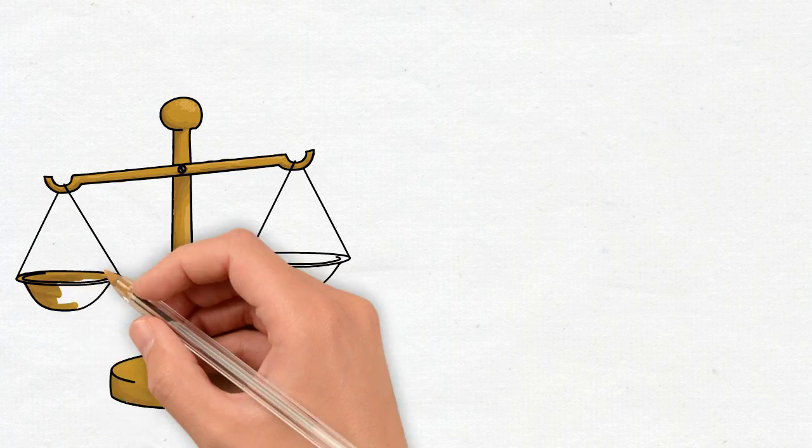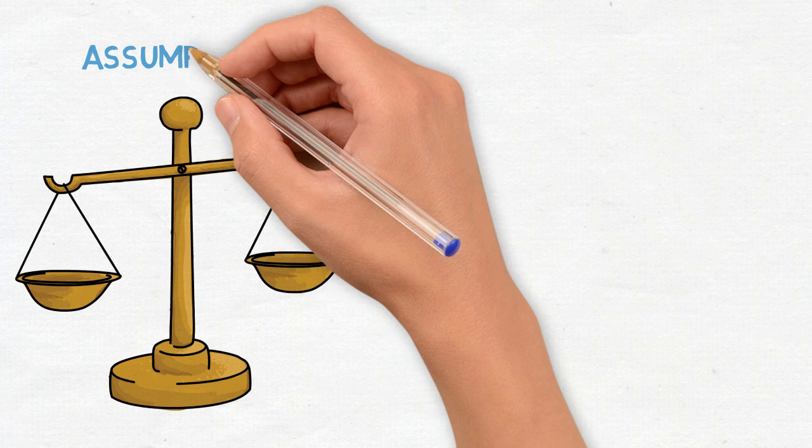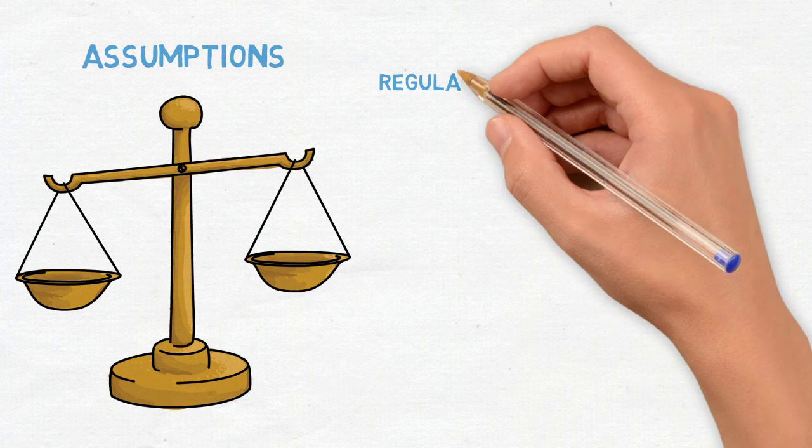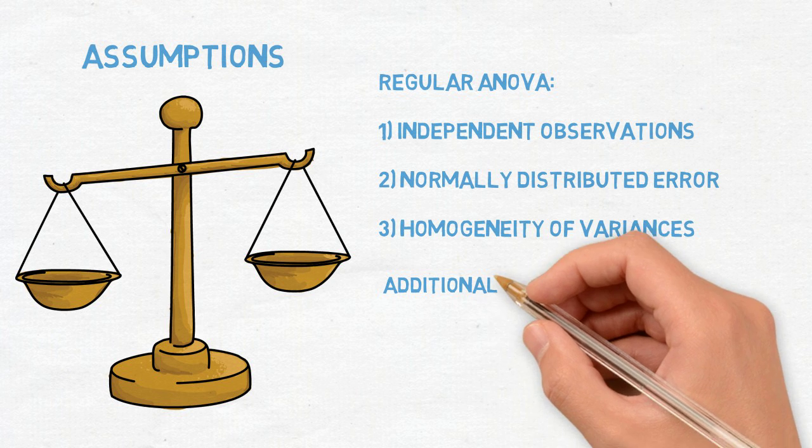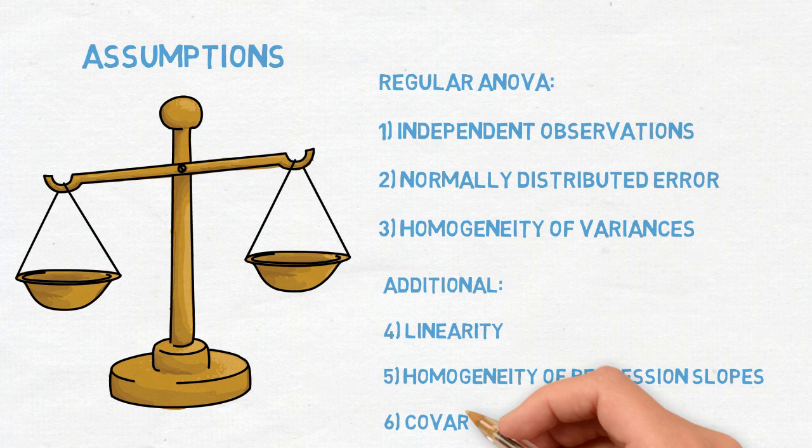Let's talk about assumptions. ANCOVA has six of them, and three you may already know from a regular ANOVA. It is important to meet all of them in order to get accurate results and prevent incurring biases. We'll talk about each of them in turn.